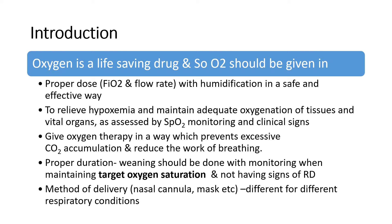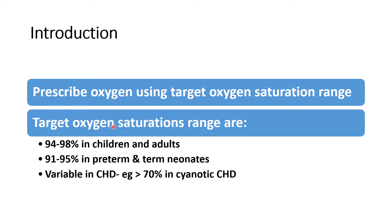We have to prescribe oxygen using the target oxygen saturation range, which varies according to the age and condition of the patient. Various diseases need different target oxygen saturations. In children and adults, 94 to 98 percent should be maintained. In neonates, whether preterm or term, 91 to 95 percent is the target. Above 95 percent, oxygen toxicity can develop; below 90 to 91 percent, hypoxemia will develop.